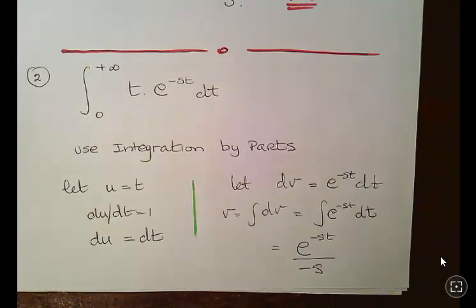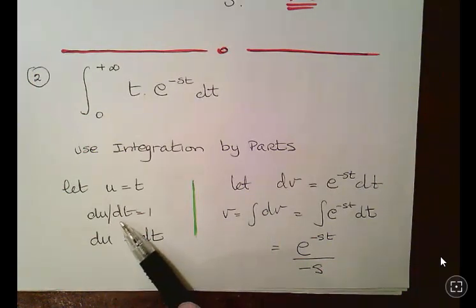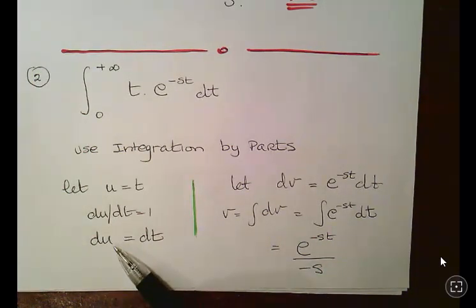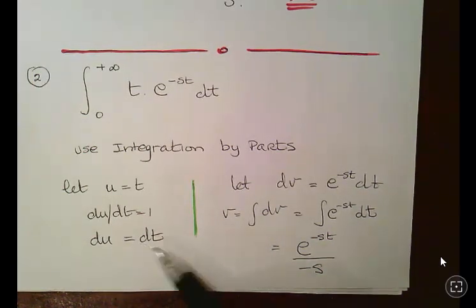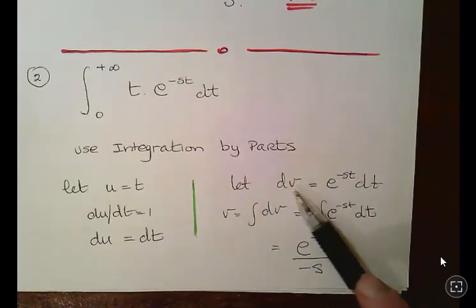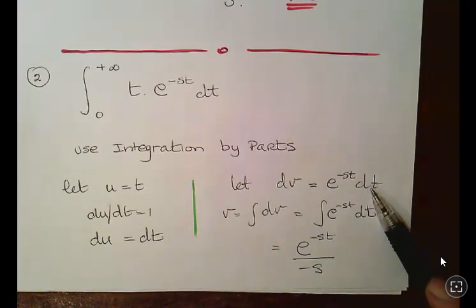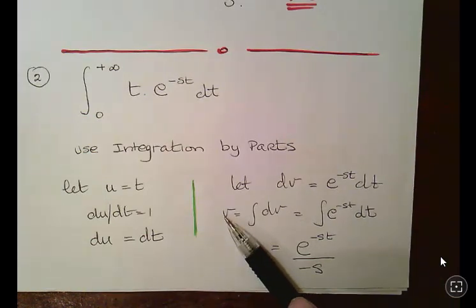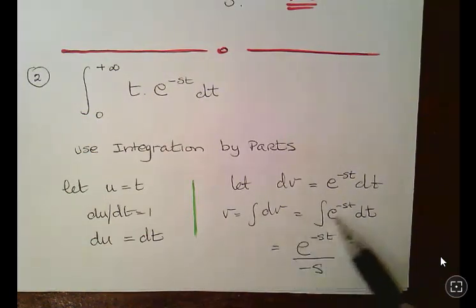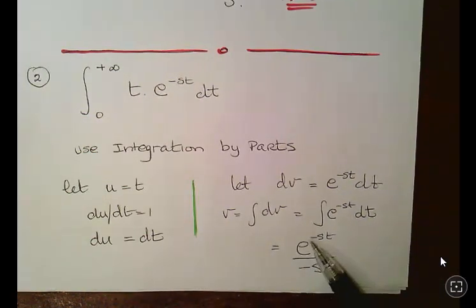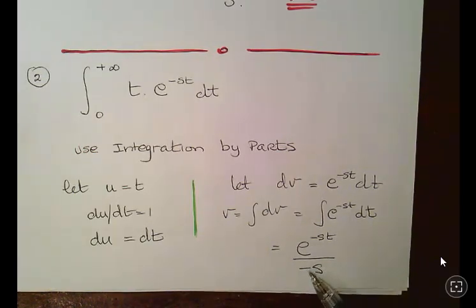We're going to let u equal to t. Therefore, du over dt is equal to 1. That means du is equal to dt. Okay. We're going to let dv equal to e to the minus st dt. Okay. That means v which is the integral of dv. Just integrate that out. And we've got e to the minus st over minus s. Which I sort of pointed out earlier on.